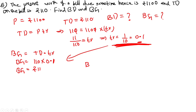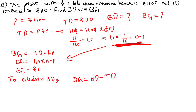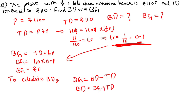BG formula: BG equals TD × t×r. So BG equals 110 × 0.1 equals rupees 11. Then to calculate BD: using BG equals BD minus TD, so BD equals BG plus TD equals 11 plus 110 equals rupees 121.